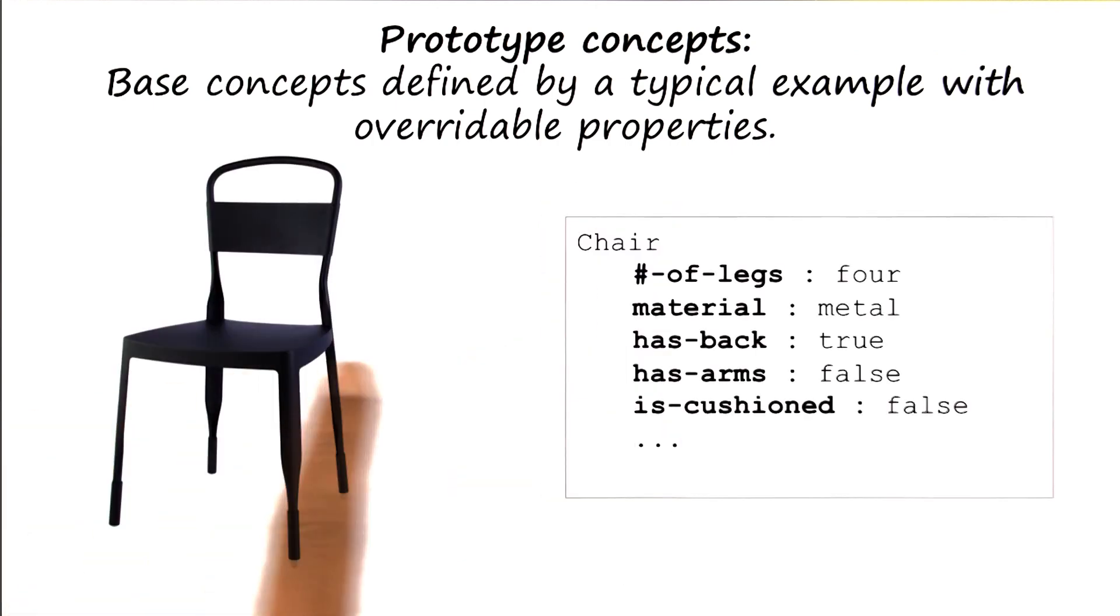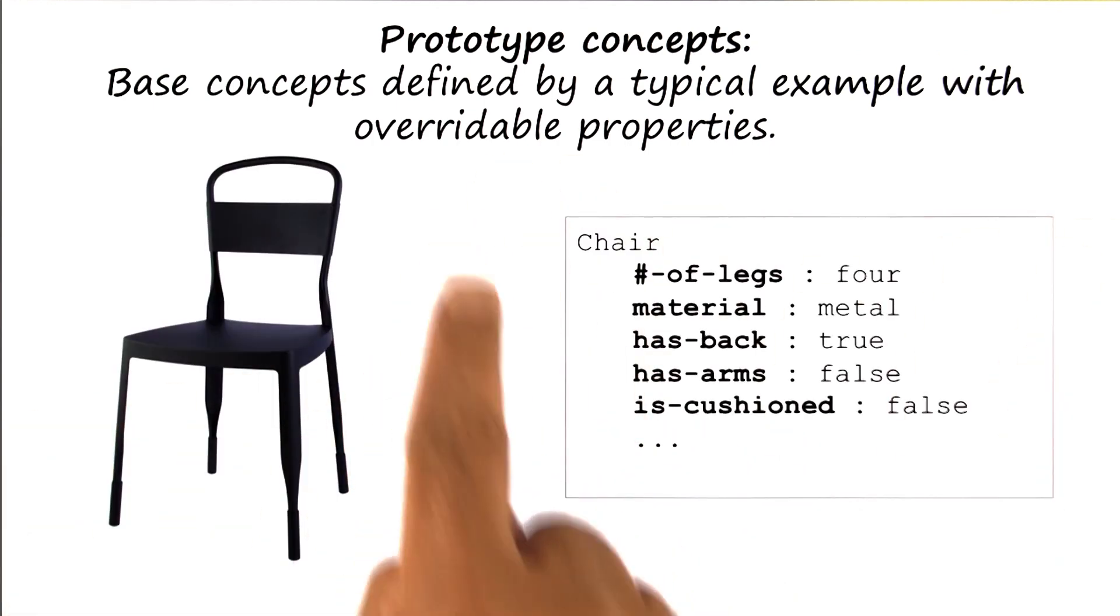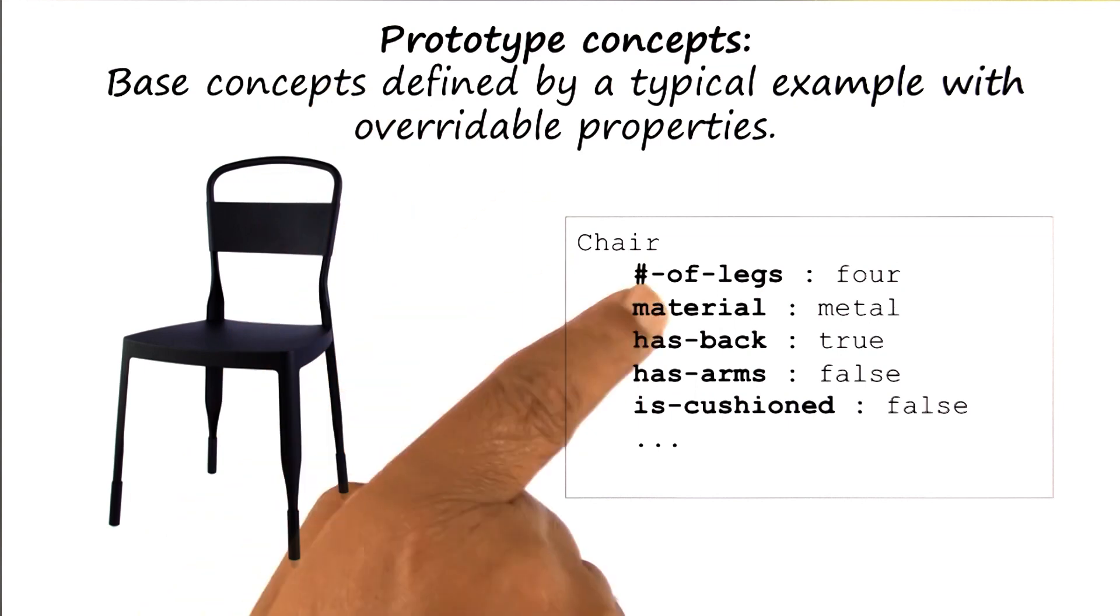Now I can represent this notion of prototypical chair in the language of frames. This is something we have come across earlier in the class. A frame has slots and fillers, as you may recall. And we use frames to represent stereotypes. Here we're talking of prototypes, so very closely related.